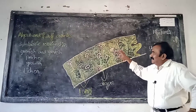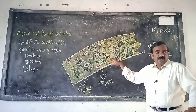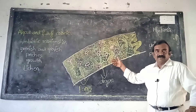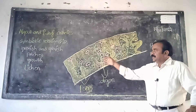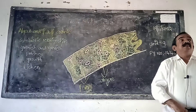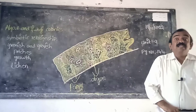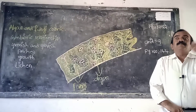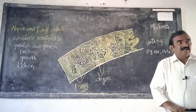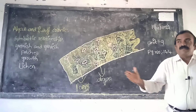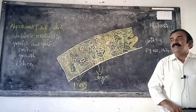Lichens are the organisms which grow on the branches of a tree or any place. Algal forms are green color and they are nothing but small plants. We observe green color algae near water tanks and wet places.